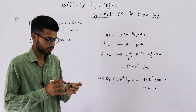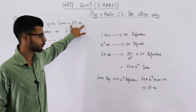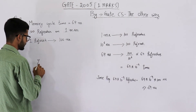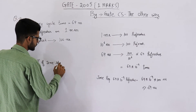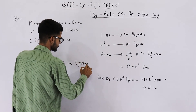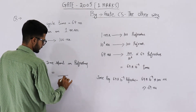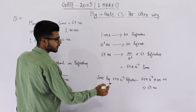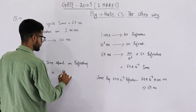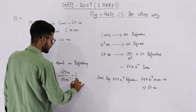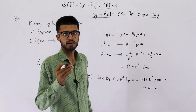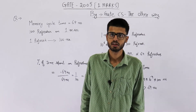So out of one cycle, which is 64 nanoseconds, you are spending 0.64 nanoseconds for refreshing. The percentage of time spent in refreshing will be: numerator is 0.64 nanoseconds divided by total cycle time of 64 nanoseconds, which equals 1 upon 100, which is equal to 1 percent. So your answer is 1 percent — in every memory cycle you spend 1 percent of the time for refreshing.